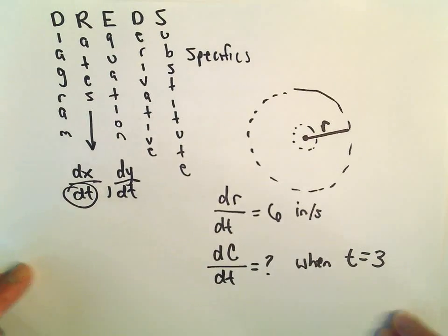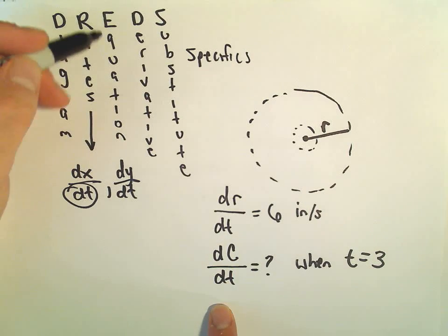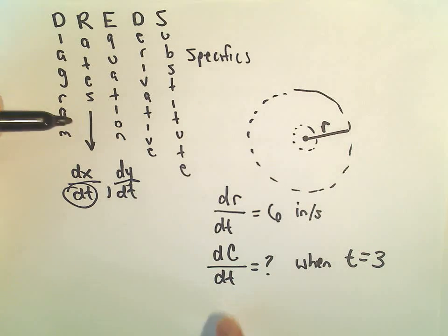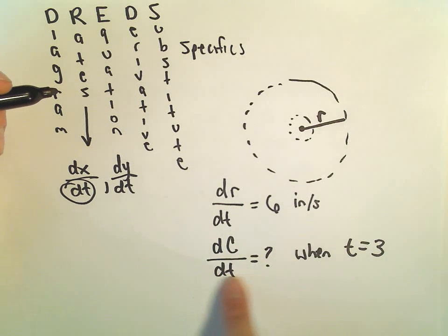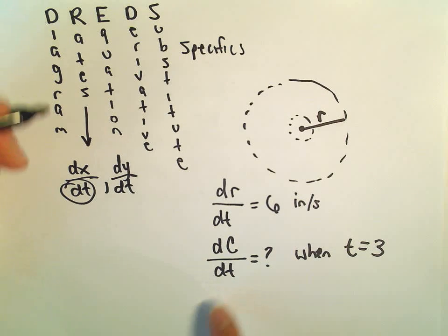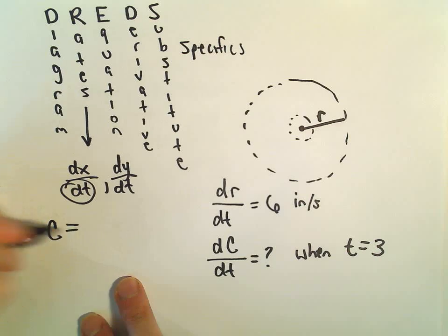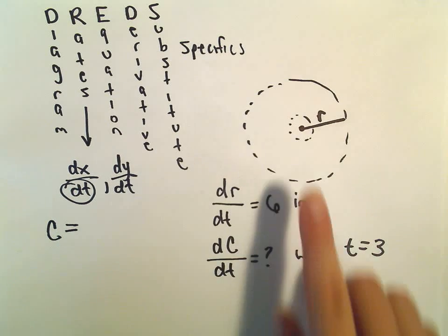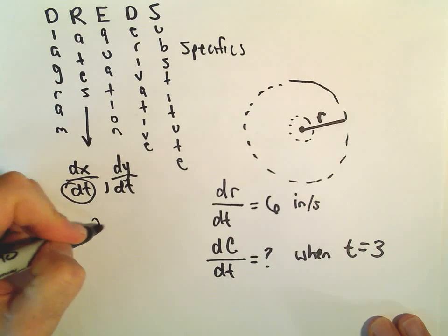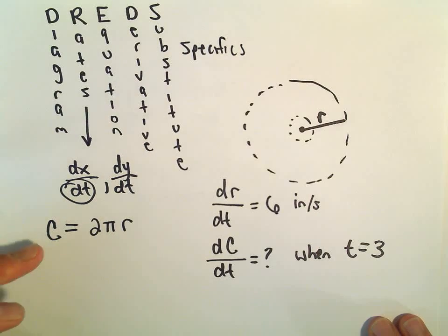Okay, so we've kind of got our little diagram. We've labeled our rates now. The next thing is we need an equation. Well, we're trying to figure out how the circumference changes. So I'm just going to use the formula that tells me circumference of a circle. Circumference of a circle is just given by 2πr.